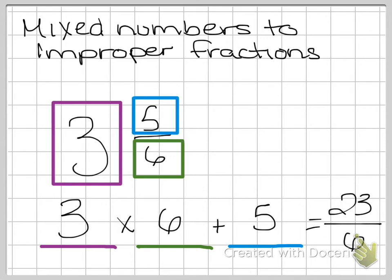So this lets me know that 3 and 5 sixths is equivalent to 23 over 6, and 23 over 6 is our improper fraction.